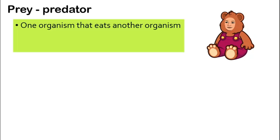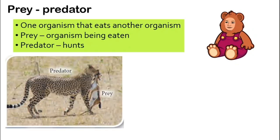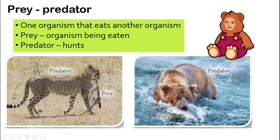Let's move on to another type of interaction: prey-predator. This is when one organism actually eats the other one, so one actually dies. The prey is the organism that is being eaten and dies, while the predator is the one that hunts the prey. For example, a cheetah eats a deer — the cheetah is the predator and the deer is the prey. Similarly, a bear is the predator that eats fish, which is the prey.